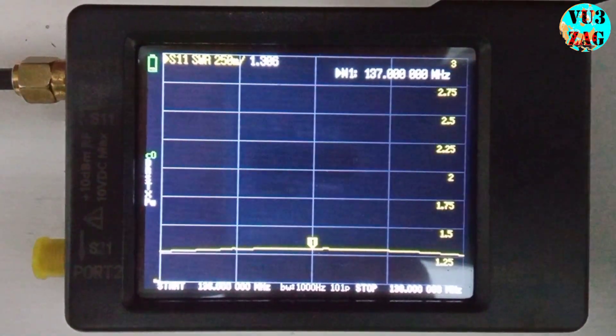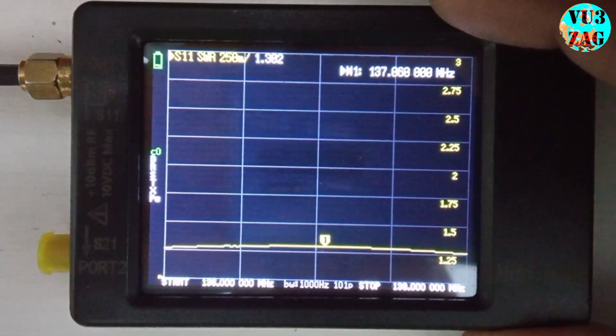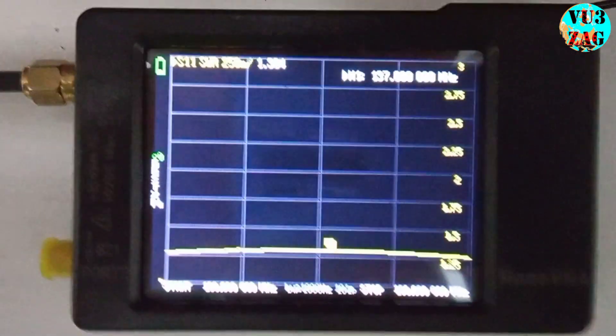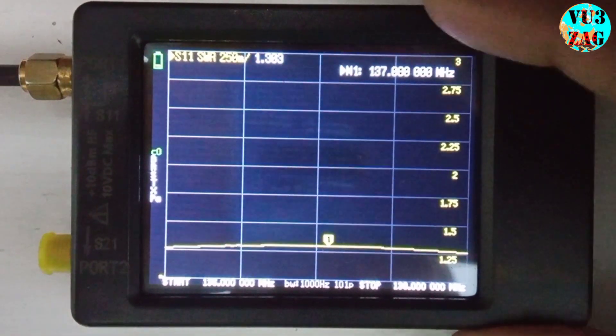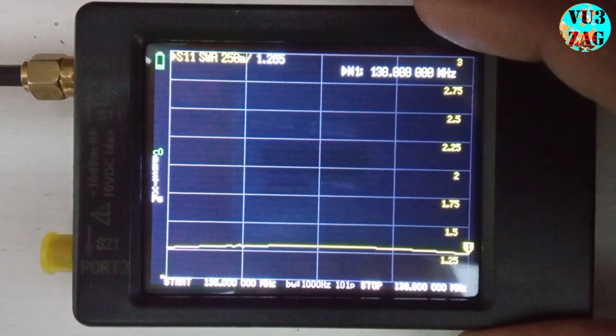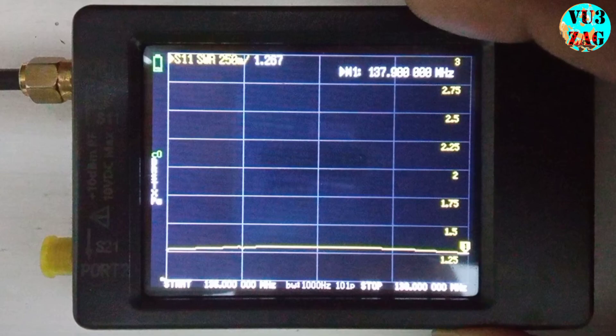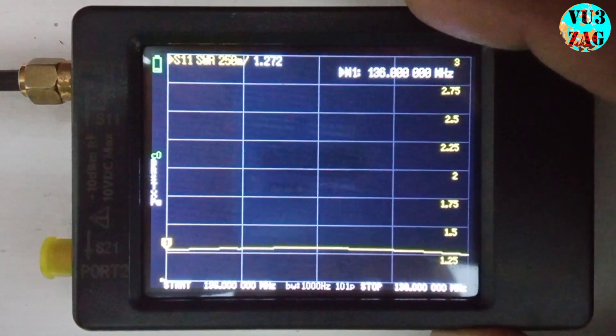As we can see, the SWR is within the acceptable range, that is 1.3. Impressive, isn't it? Whether it's satellites passing overhead or signals coming from various angles, the coaxial QFH antenna ensures you don't miss a thing.